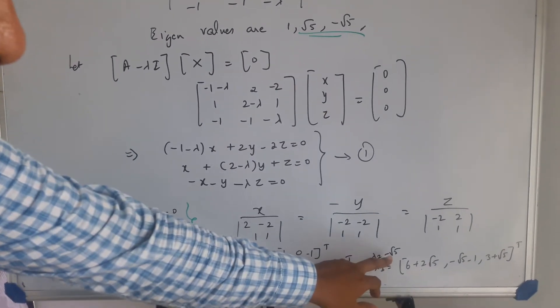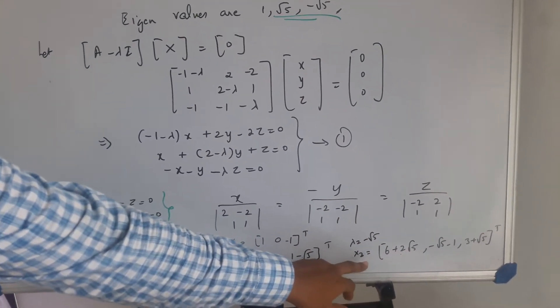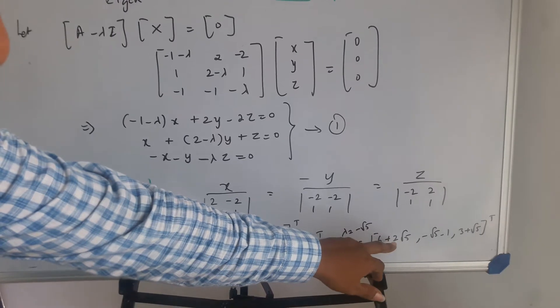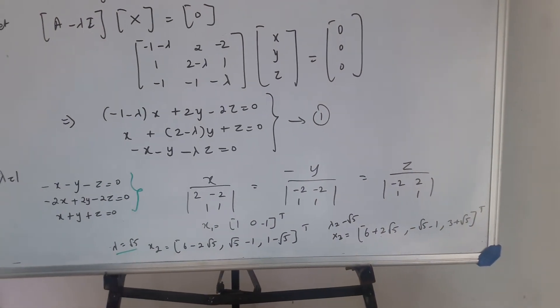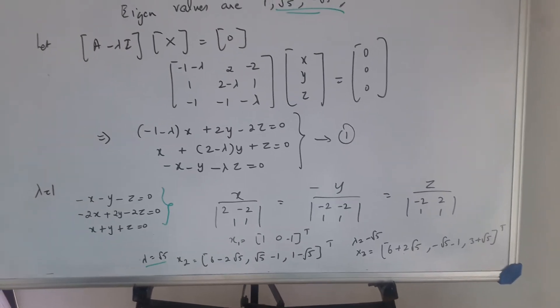For lambda as minus root 5, I get another vector which is 6 plus 2 root 5, minus root 5 minus 1, 3 plus root 5 transpose.